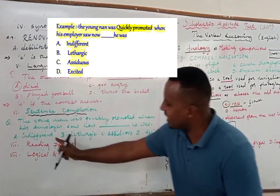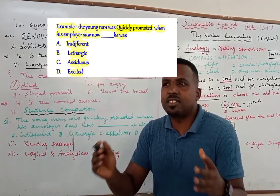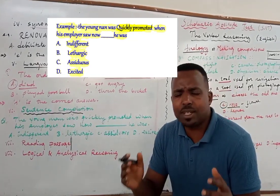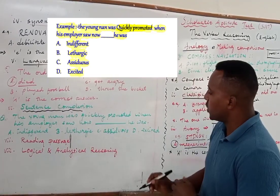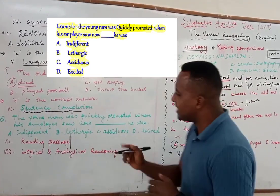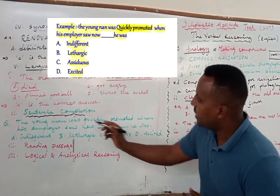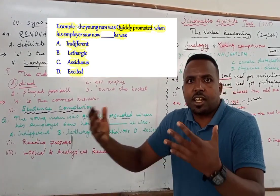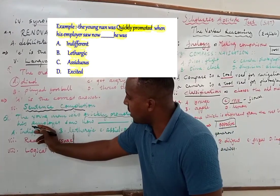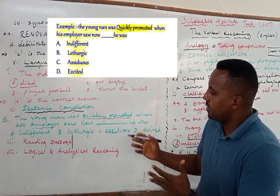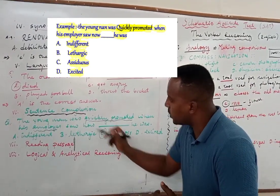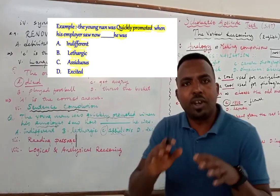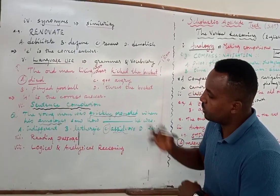You need to know the meanings of the words. For example, indifferent means neutral, not concerned or not interested. Lethargy means lacking energy. Diligent means hard worker. Excited means happy. There is a key word: the young employee was quickly promoted. When someone is promoted as an employee, obviously they are diligent. So contextually you can put the right words in the blank spaces. We will have more items from the national exam on other YouTube sessions.